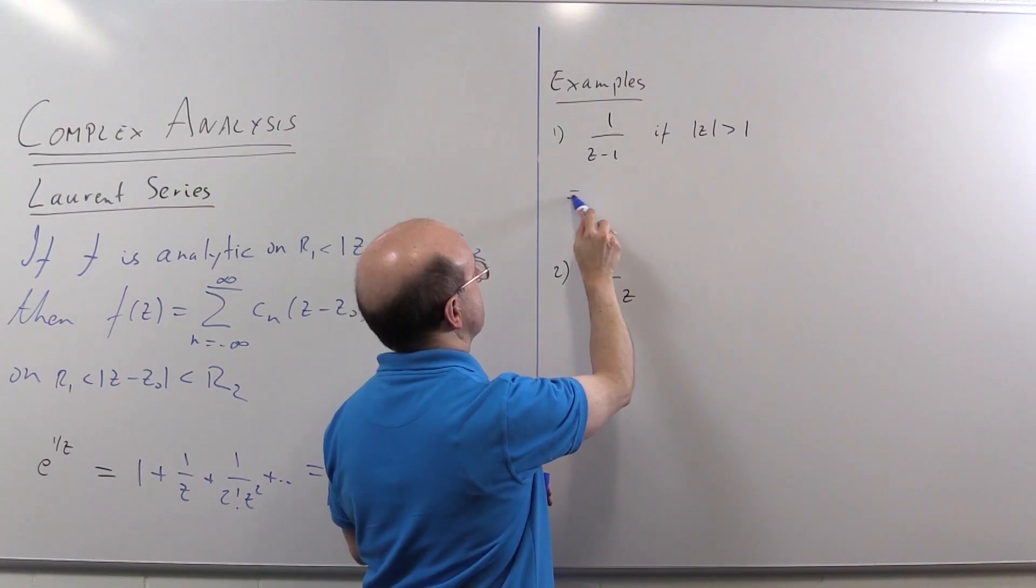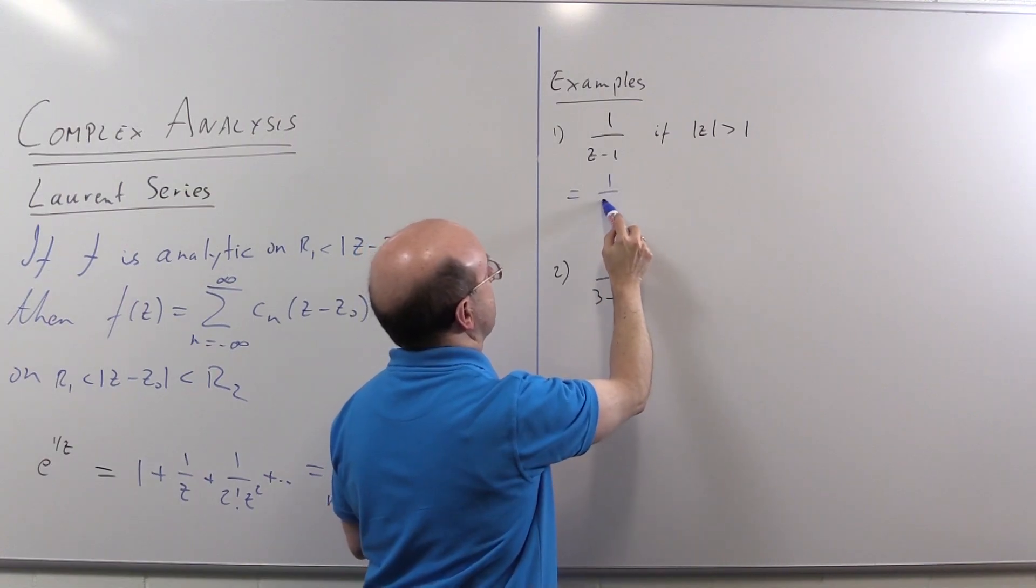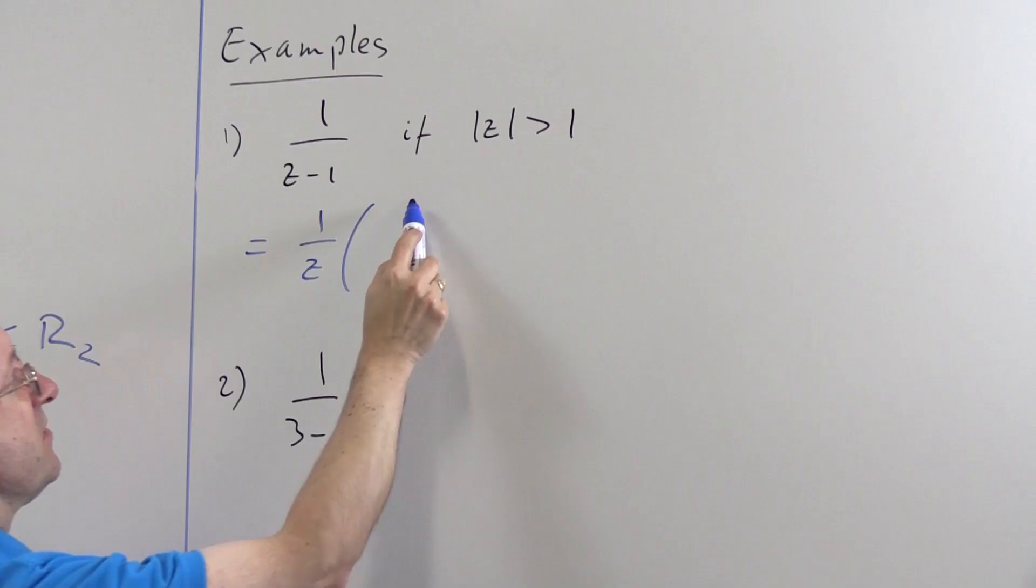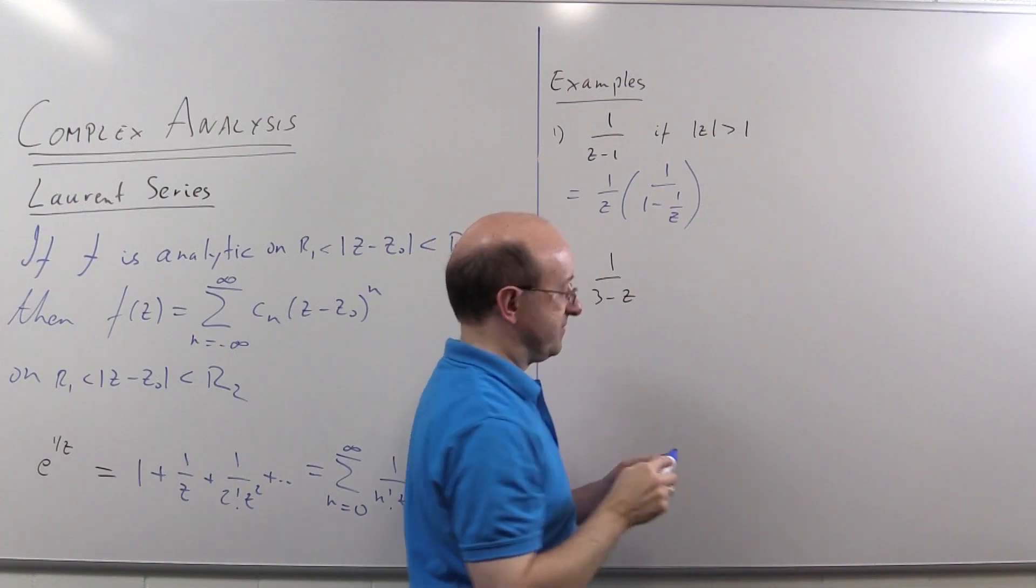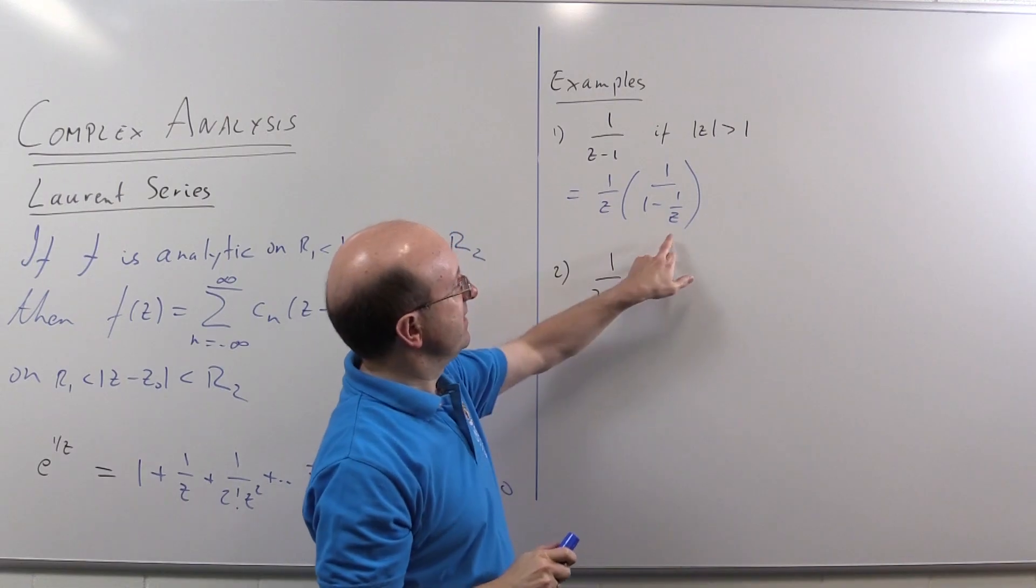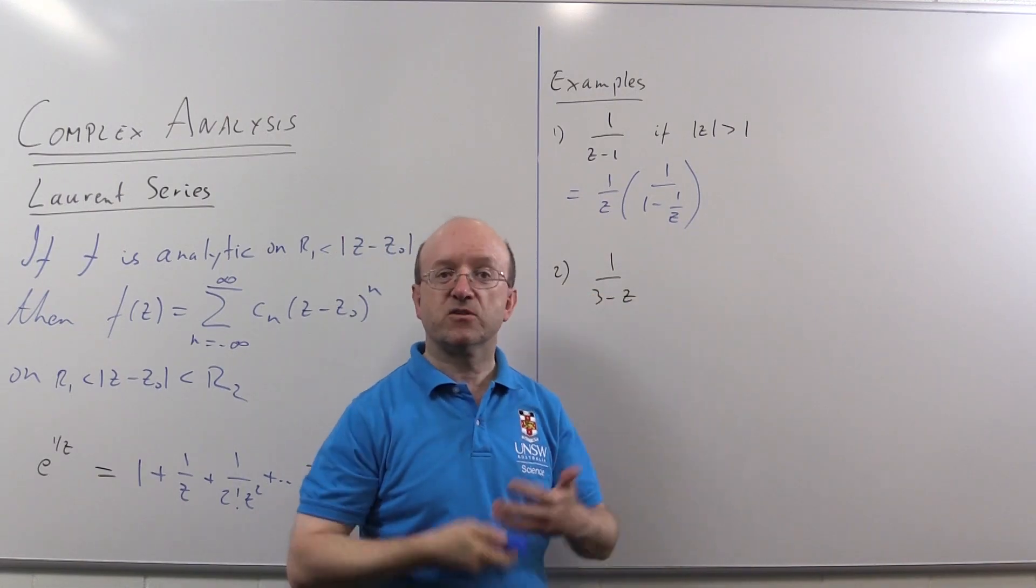Only rather than taking out a constant, so to speak, we take out the z. We rewrite that as 1 upon z over 1 minus 1 minus 1 upon z.